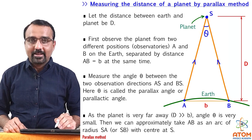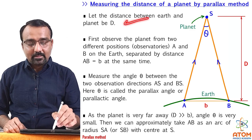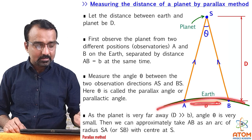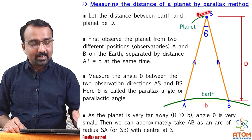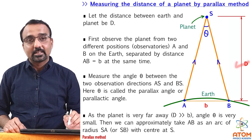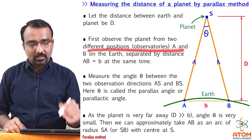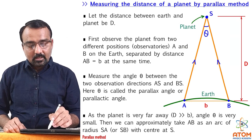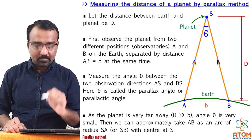Now, measuring the distance of a planet by the parallax method. Let us determine the distance D of a planet. Here is the planet and here is the Earth's surface. We need to find out the distance D of this planet. First, observe the planet from two different positions — two different observatories, A and B, from the Earth — separated by a distance AB, that is b, at the same time.